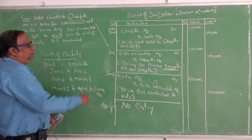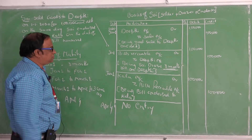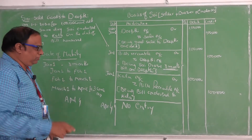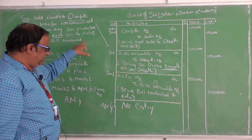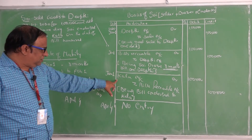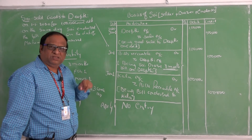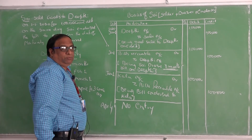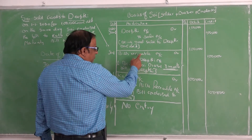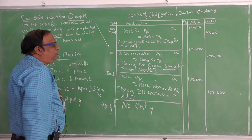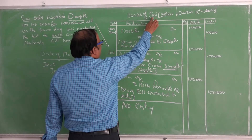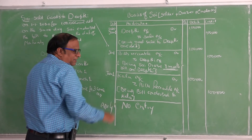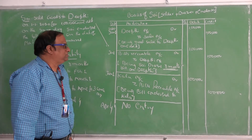So in the books of Saai, only: first, Deepti account debit to sales — goods sold. Then bills receivable account debit to Deepti — Saai draws a 3-month bill. Then Kala account debit to bills receivable — Saai endorses the bill to Kala. And no entry on April 4th because Deepti pays the amount directly to Kala.